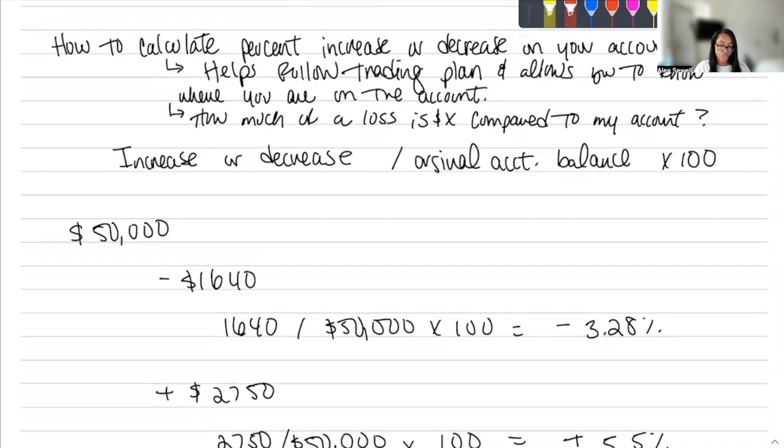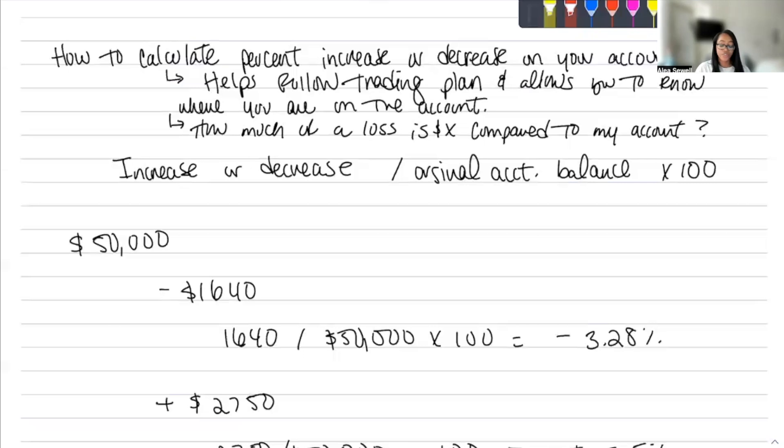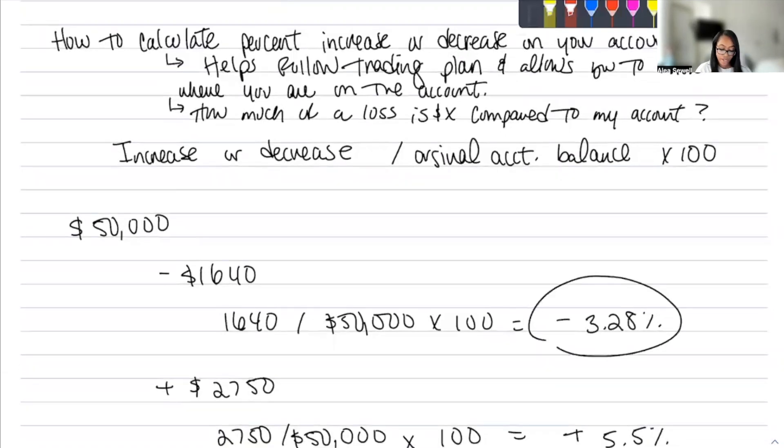So knowing how to calculate the percent increase or decrease that you are on your account, it's helpful because now we know how much we are up or how much we're down. And now we can say, okay, if I'm down 3.2%, and the max drawdown is 12%, I have now approximately 9% left to risk or left that I have before I blow this account challenge. Also, it helps follow your trading plan because if you're saying, on a daily basis, I only want to lose up to 2%, once you calculate the percent decrease on your account, you're like, wait, I lost actually negative 3%, which you should have known when you were risking, taking that trade.